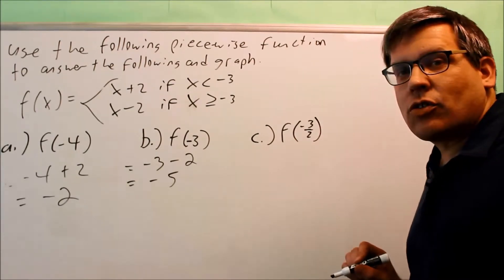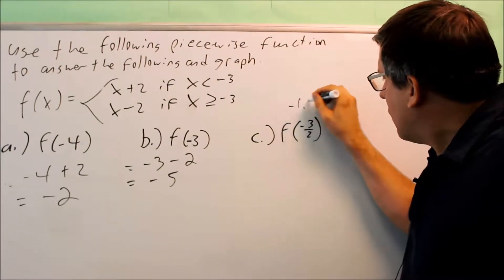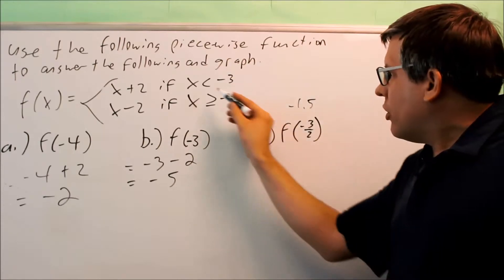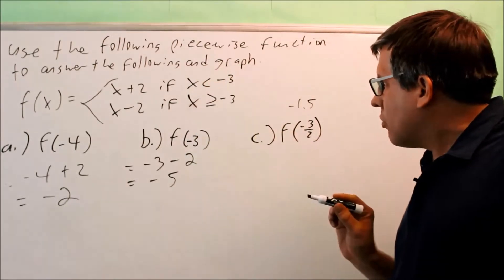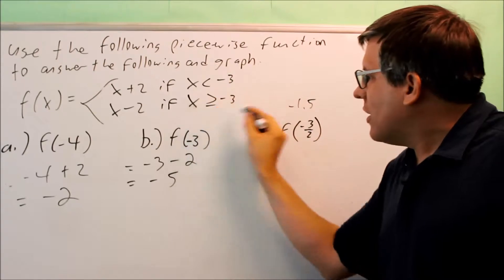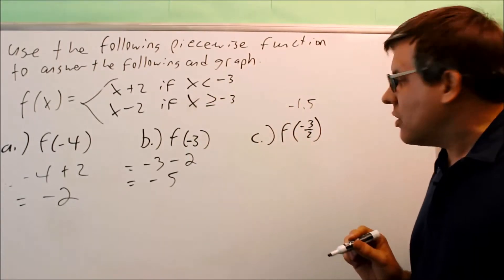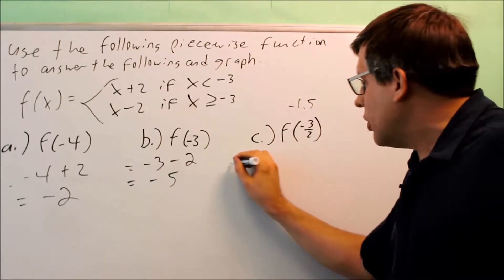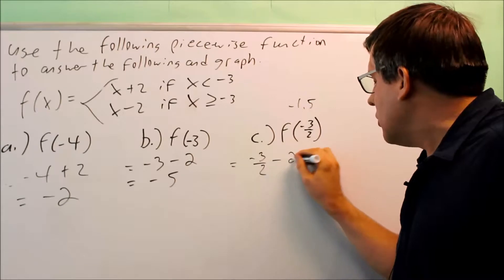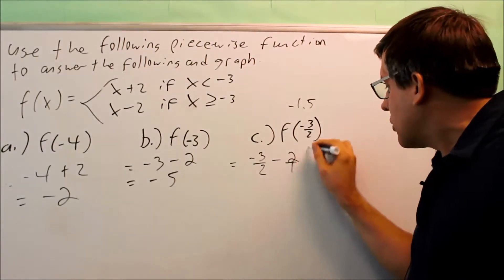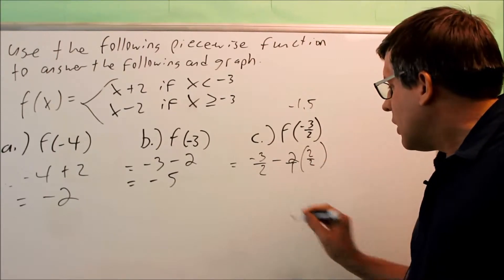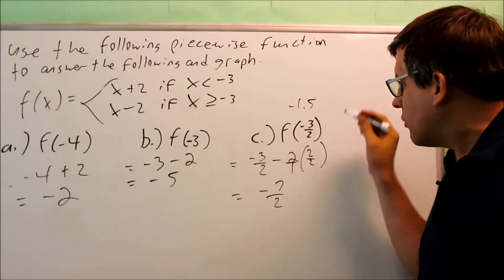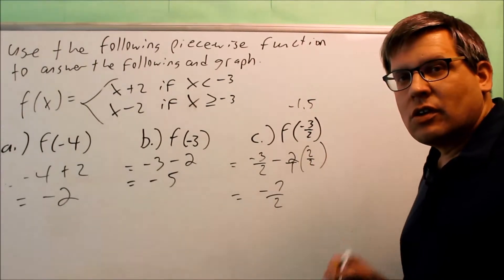Now let's do f of negative 3 halves. Negative 3 halves is the same as negative 1.5. Negative 1.5 is not less than negative 3; however, negative 1.5 is greater than negative 3. So we put negative 3 halves into the second expression only: negative 3 halves minus 2. We need common denominators, so that's negative 3 halves minus 2 over 2, giving negative 7 halves as a result.